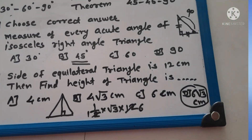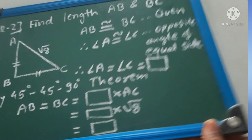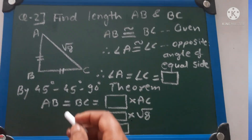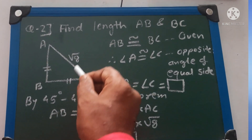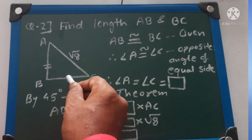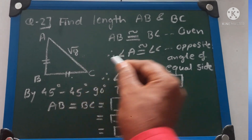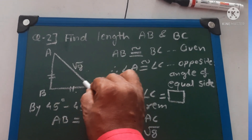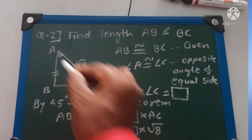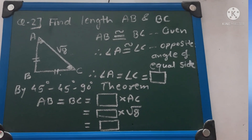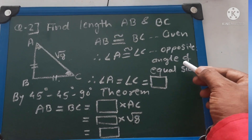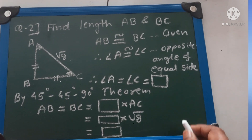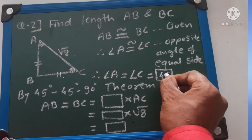The next question: find the length of AB and BC. It is an isosceles right angle triangle and the length of the hypotenuse AC is root 8. These two sides AB and BC are equal. Since AB equals BC, the opposite angles are congruent — angle C is congruent to angle A. Those angles are opposite angles of equal sides, so by the 45-45-90 theorem, angles A and C are both 45 degrees.